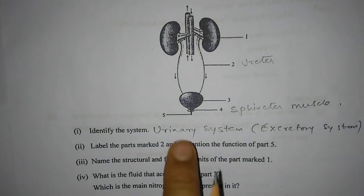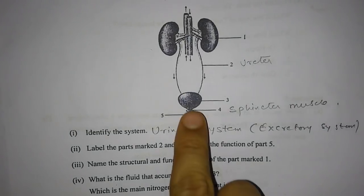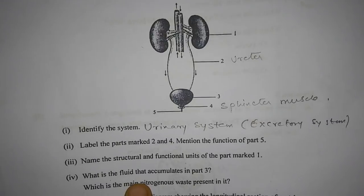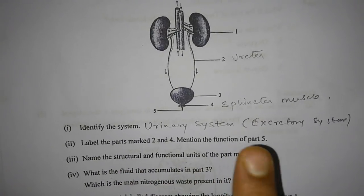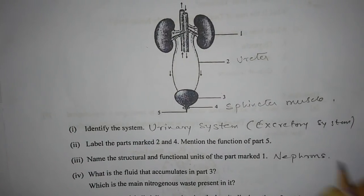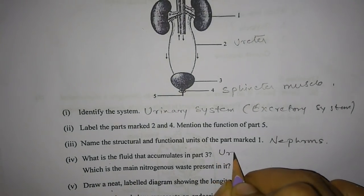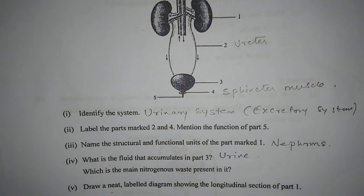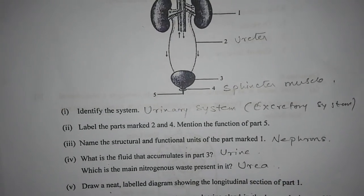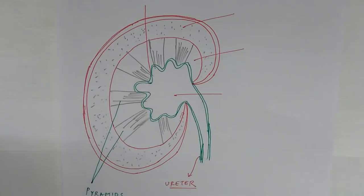Mention the function of part 5, the urethra — its function is to transport all waste products collected in the urinary bladder to the outside of the body. Number three — name the structural and functional unit of part 1 (the kidney). It is the nephron. Number four — the fluid that accumulates in part 3 is urine, and the main nitrogenous waste present in it is urea.